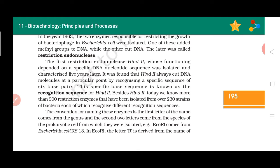Apart from HindII, nowadays more than 900 restriction enzymes are known — over 900 restriction enzymes have been isolated and identified from over 230 strains of bacteria. There is also a proper formula for naming restriction enzymes, just like formulas in mathematics.